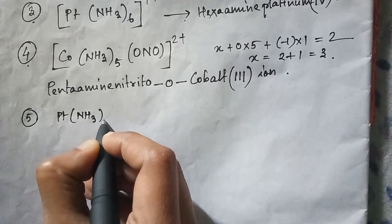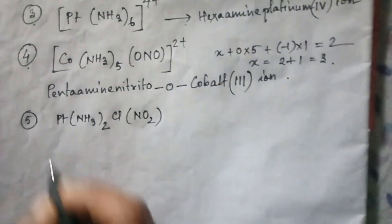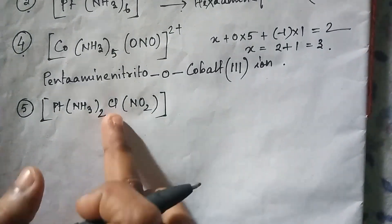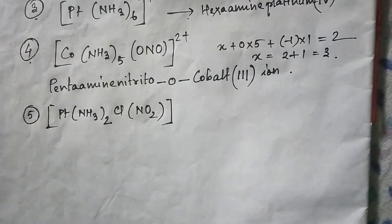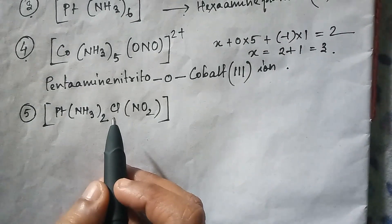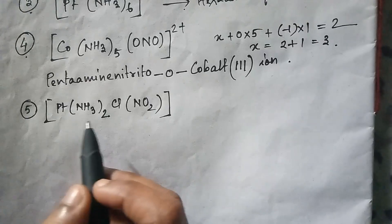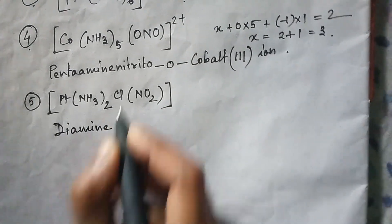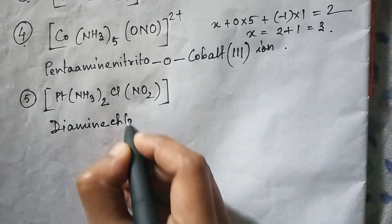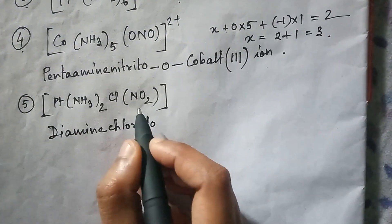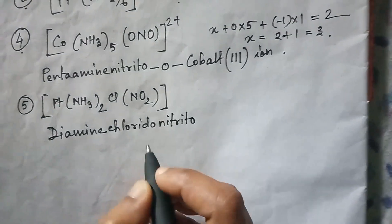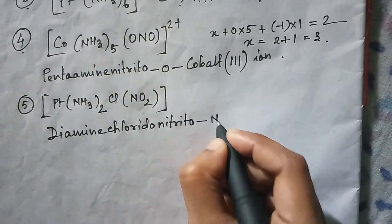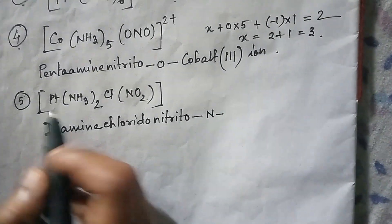Next example: [Pt(NH₃)₂Cl(NO₂)]. This is the coordination sphere part, and three types of ligands are present: amine, chloro, and nitrito. Writing in alphabetical order, 'a' comes first. There are two amine groups, so write 'diamine'. Then write 'chlorido'. Then 'nitrito'. The NO₂ group is attached to platinum through a nitrogen bond, so write 'N'. Then write the metal atom, platinum.